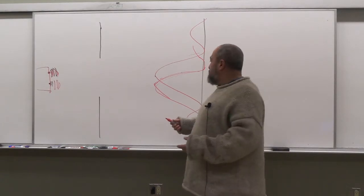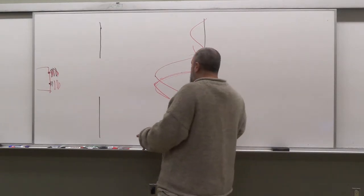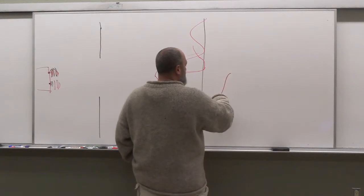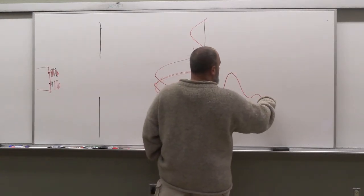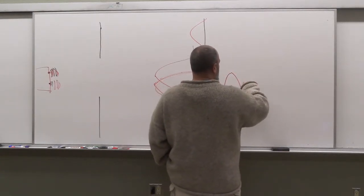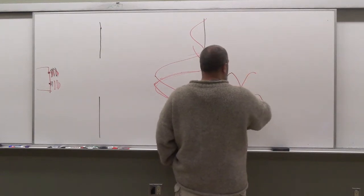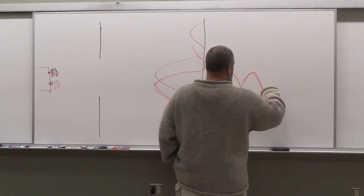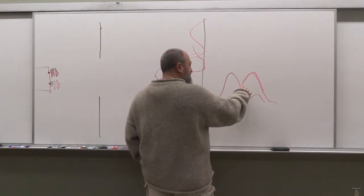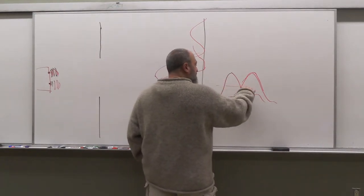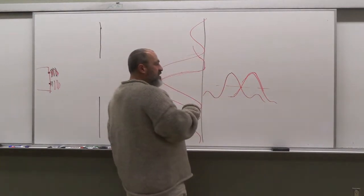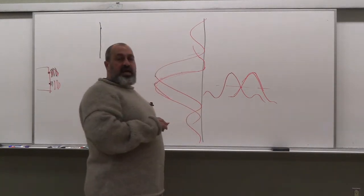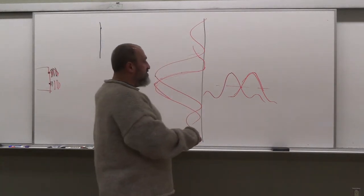If they meet below half height, you can resolve them; if not, then you can't. So what does that look like? Well, for me to be able to resolve them, I need to have a peak here and maybe another peak that looks something like that. The idea is that if the two central peaks meet at below the half height, then I can tell them apart.